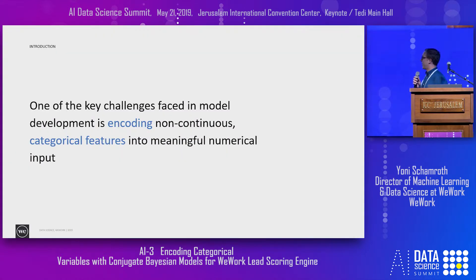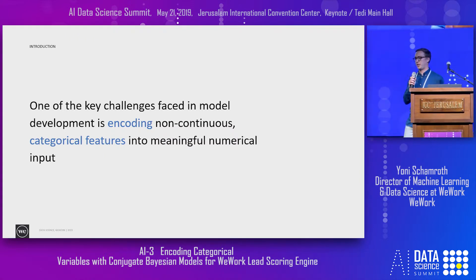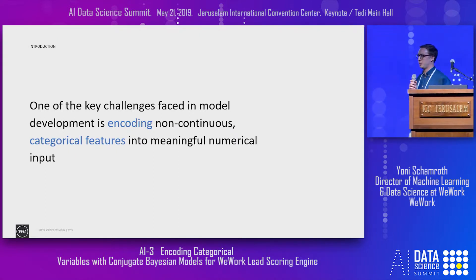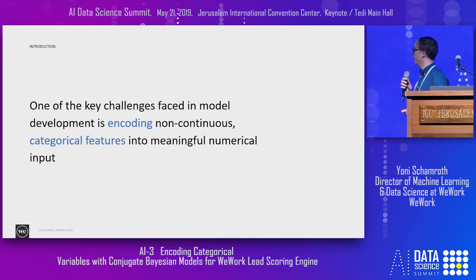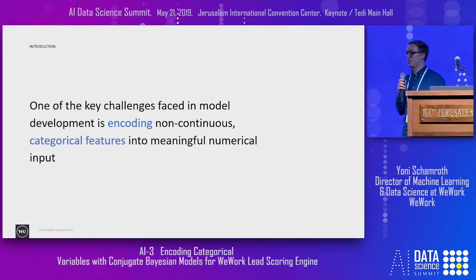One of the key challenges across many domains that data scientists face is how to encode categorical features into meaningful numerical input for machine learning algorithms. These are features such as weather, industry, location, and profession. They're non-continuous, typically non-numerical, and have no intrinsic order.